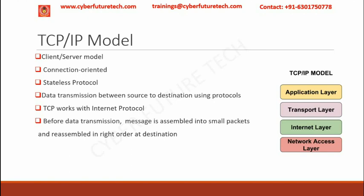The lowest layer in the TCP/IP model is the network access layer. It is a combination of the physical and data link layers. It is responsible for data transmission over a physical network. Functions like modulation, line coding and bit synchronization, frame synchronization, and error detection are done. Protocols like ARP and PPP are used in this layer.